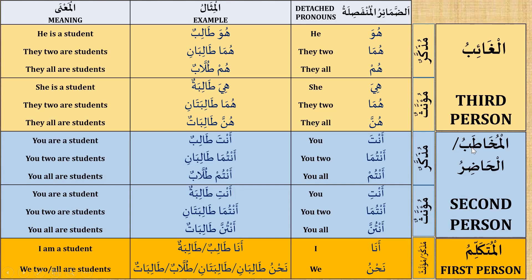Let's go to the next — the second person. You are a student; you two are students. These three rows are masculine. And you are a student; you two are students; you all are students. And these three rows are feminine.